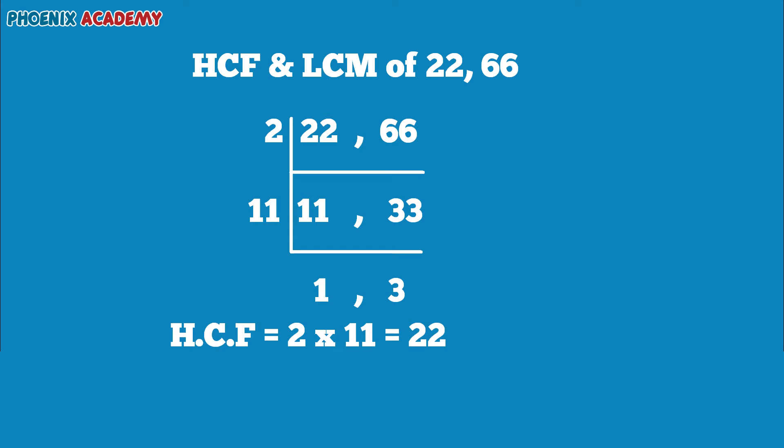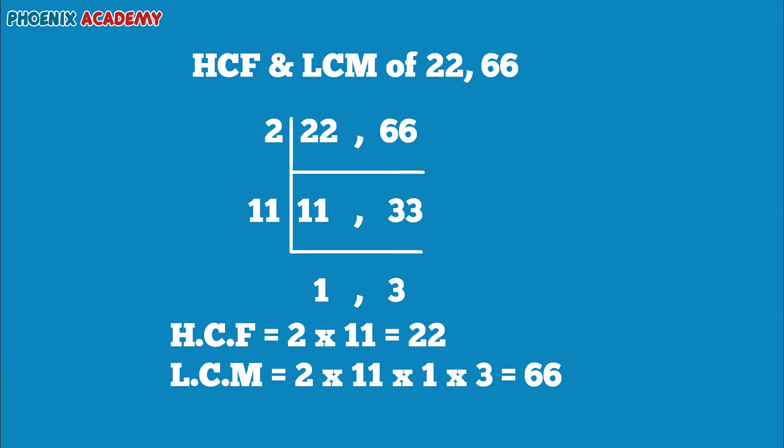Now what is LCM? To find the LCM of two or more numbers, we express each one of them as the product of prime factors. Then we take any prime factor that appears the maximum number of times in the factorization of the given numbers and multiply them. Here we are multiplying 2, 11, and 3, so we get 66. 66 is the least common multiple of 22 and 66.